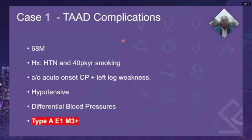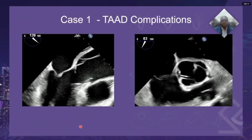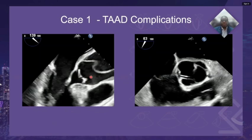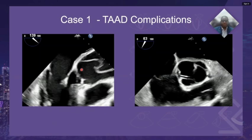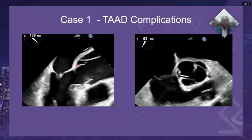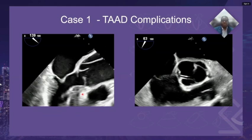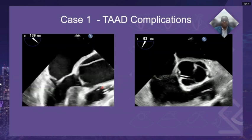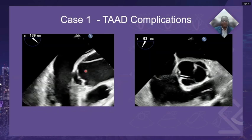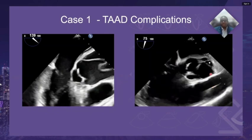In the first case, we consider a 68-year-old male with hypertension and smoking history, who presented with acute chest pain and left leg weakness, hypotensive in the emergency room with differential blood pressures. Imaging revealed a type A, E1, M3+ aortic dissection. The patient was brought to the operating room and 2D imaging of the aortic valve and root in long axis revealed loss of normal contours of the proximal ascending aorta with dilation and a small coaptation defect. On short axis, there was also some prolapse of the non-coronary cusp.